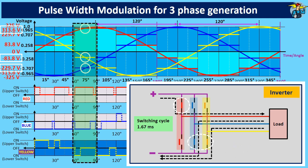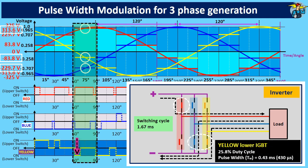Similarly, to get the negative value of 83.8 volts for the yellow color phase, duty cycle of the lower IGBT switch should be 25.8%, and the pulse width should be 0.43 milliseconds.